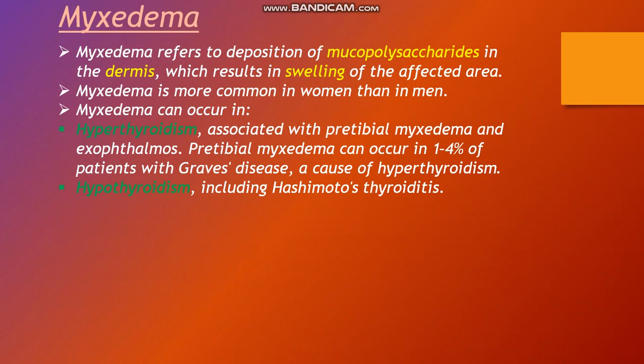Myxedema refers to the deposition of mucopolysaccharides in the dermis, which results in swelling of the affected area. Myxedema is more common in women than in men. Myxedema can occur in hyperthyroidism, associated with pretibial myxedema and exophthalmos. Pretibial myxedema can occur in one to four percent of patients with Graves' disease, a cause of hyperthyroidism.